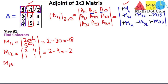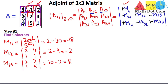Similarly, M13 is the minor of the element at row 1, column 3. We delete that row and column and take the determinant of the remaining elements: 2, 1, 2, 5. The determinant is 2×5 − 1×2 = 10 − 2 = 8. Then M21 is the minor of the element at row 2, column 1. Deleting its row and column, the remaining elements give the determinant: −1×1 − 2×5 = −1 − 10 = −11.